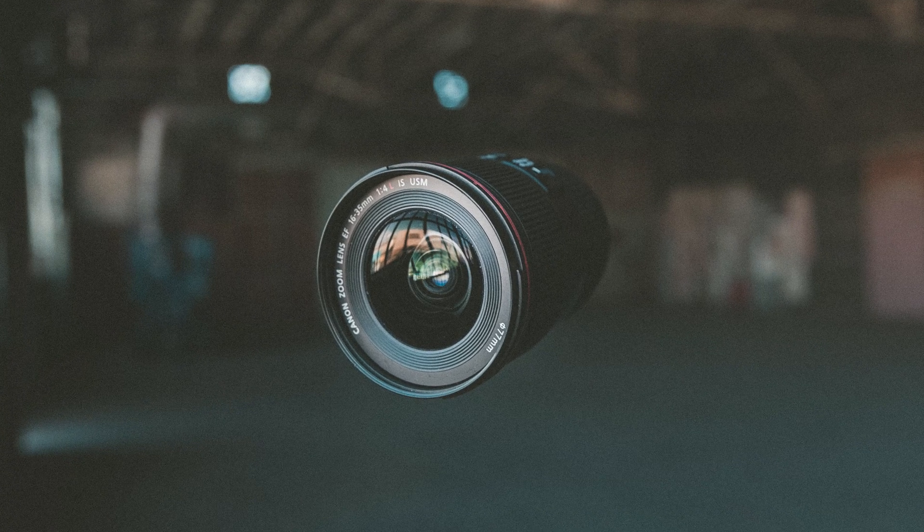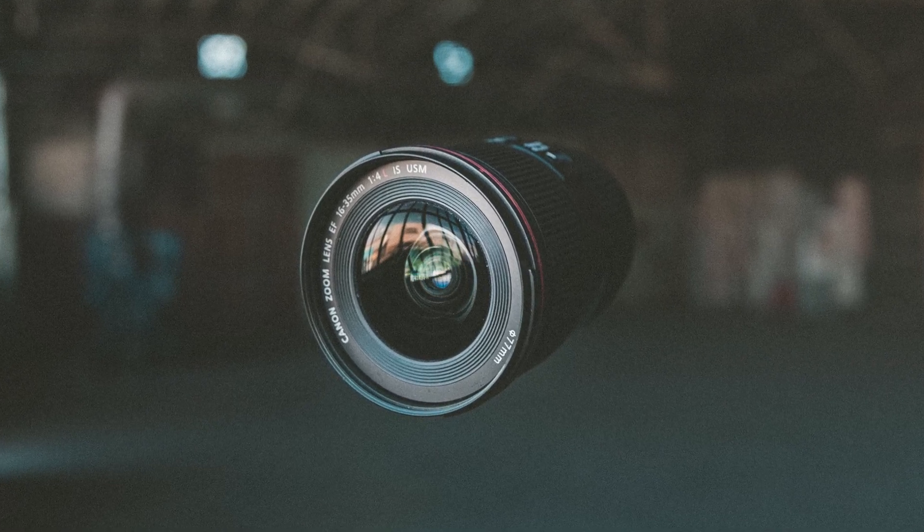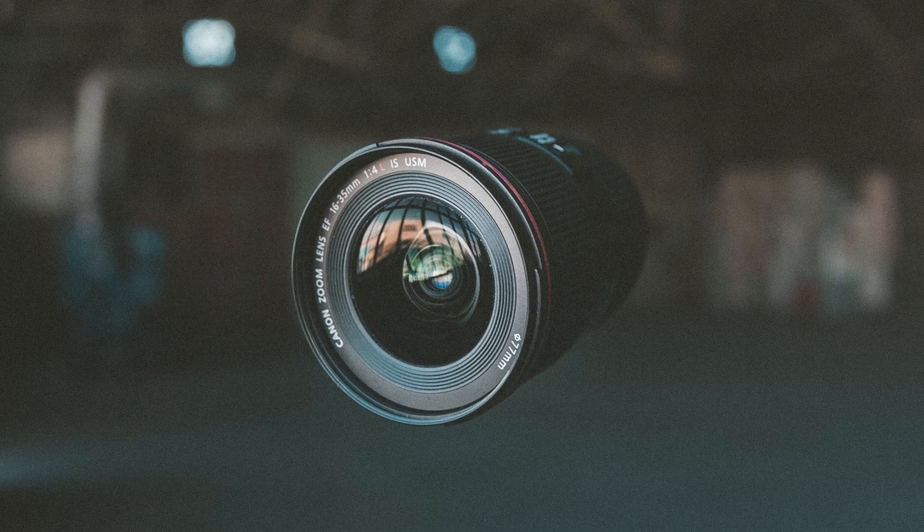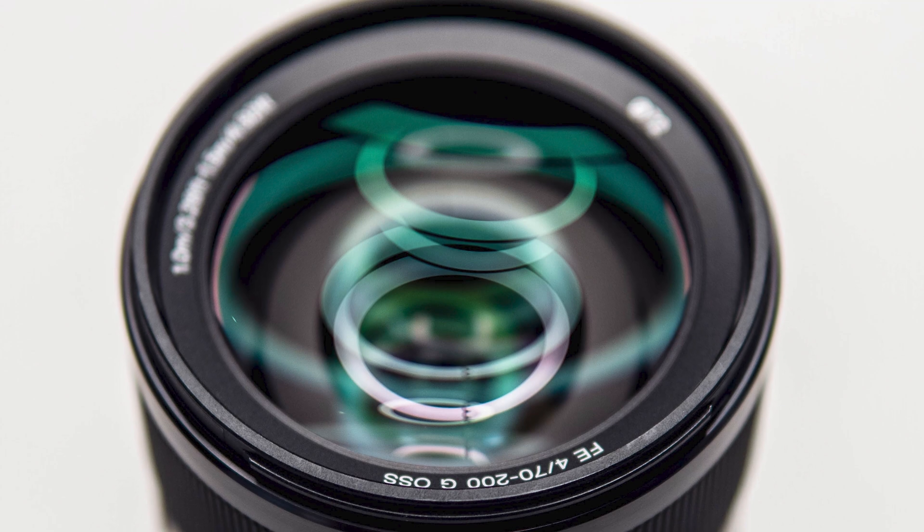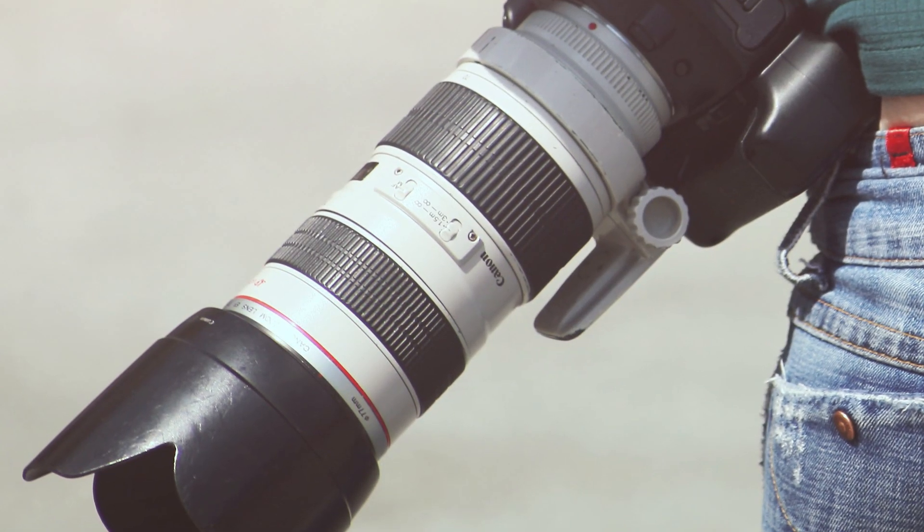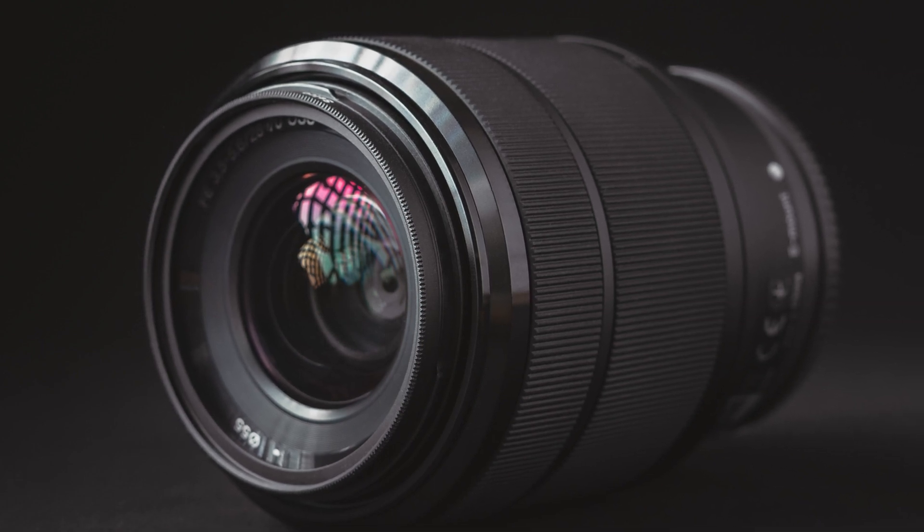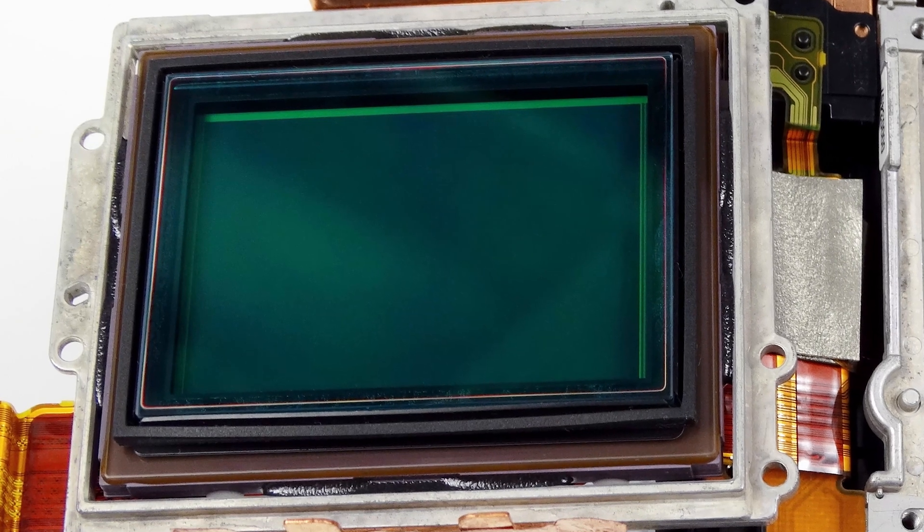So absolutely this does happen where you might have a set of lenses that you're used to and you upgrade your camera body, it has a very tight megapixel density, and all of a sudden that lens doesn't look really great anymore. And we're mostly seeing it in older zoom lenses. Newer zooms and primes tend to do a little bit better, but this is really dependent on a case-by-case basis between the sensor and the lens that you're using.